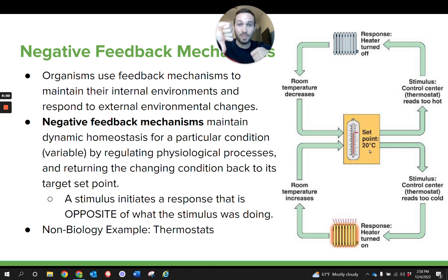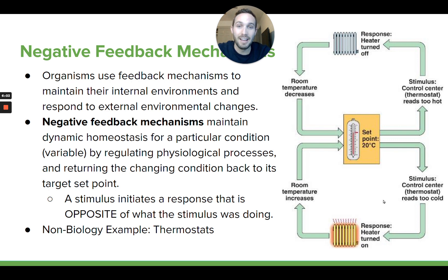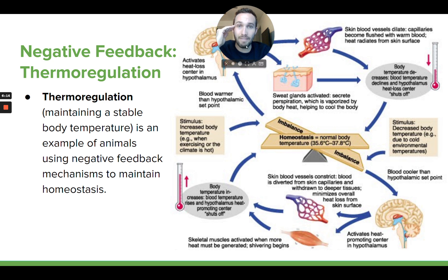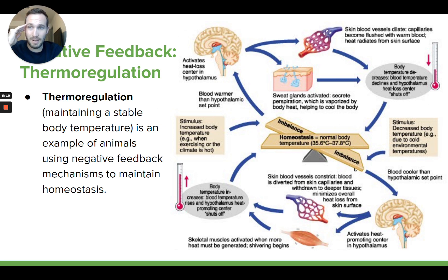There are lots of examples of this in biology. One common example is thermoregulation — the ability of an organism to maintain a stable body temperature — and that involves a couple of negative feedback mechanisms. In this picture, there's a set normal body temperature, which is around 96 to 97 degrees Fahrenheit, or about 36 degrees Celsius.